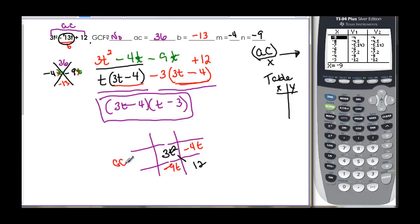Greatest common factor here. That's going to give me just a t. And then we do greatest common factor here. And that's going to give me a 3t.